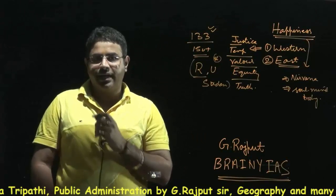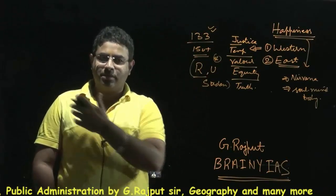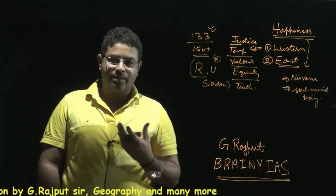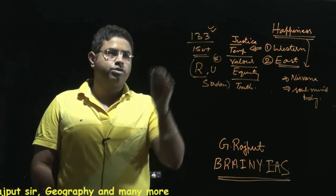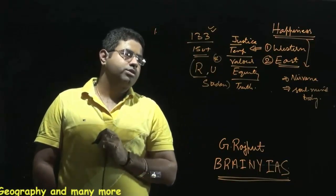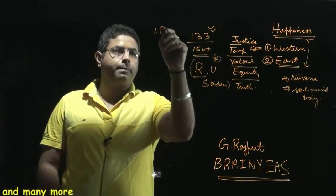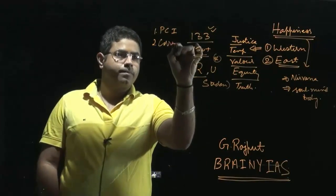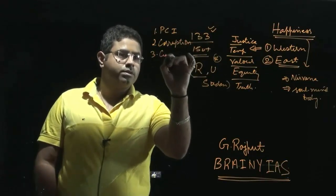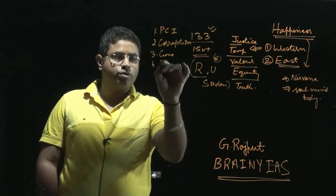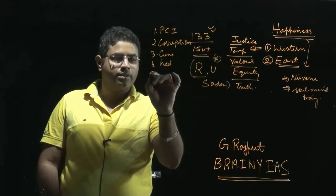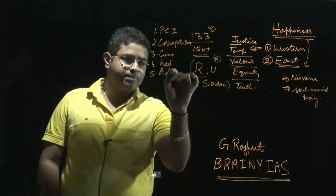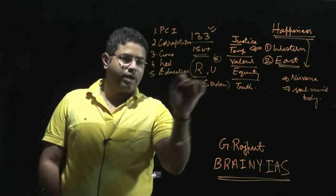How has this index ranked India, and what are the parameters of the World Happiness Index released by the United Nations? The general parameters taken into consideration are: first, per capita income; second, corruption; third, generosity; fourth, health; and fifth, education.